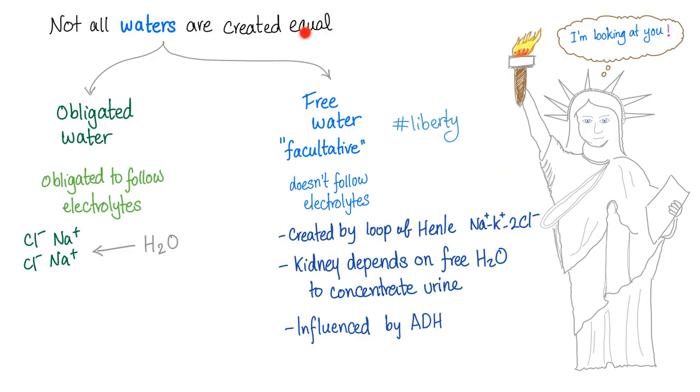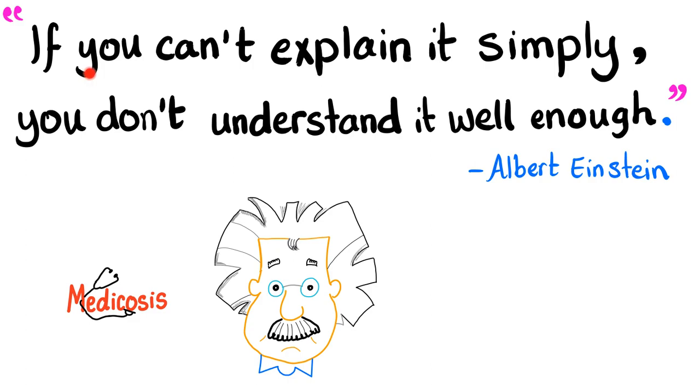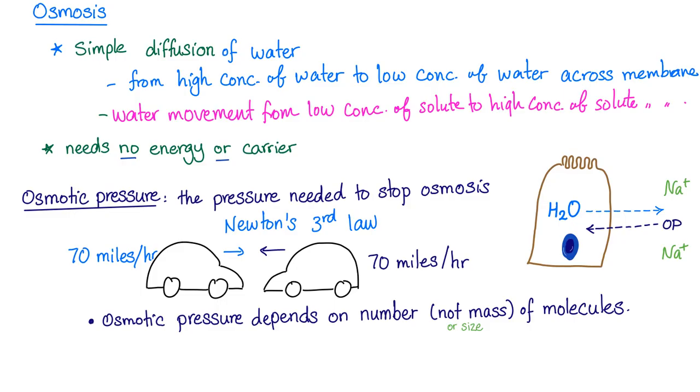There are two types of water, obligated water and free water. When we're talking about osmosis, which type are we talking about? We're talking about the obligated water. Albert Einstein said, if you can't explain it simply, you don't understand it well enough. Thank you, sir. I think many professors should learn from you. So, what is osmosis? Osmosis is simple diffusion of water.